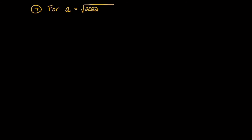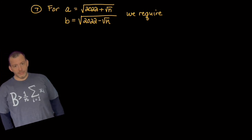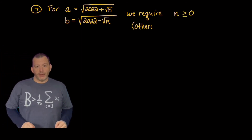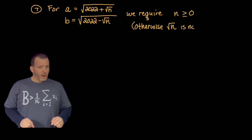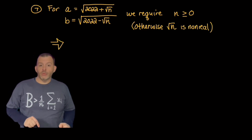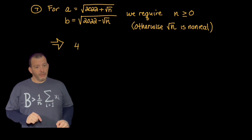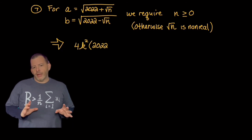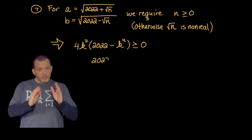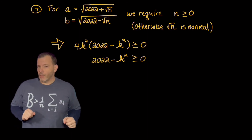Recall what a and b are: a is the square root of (2022 + √n) and b is the square root of (2022 − √n). We can now put bounds on n. First, we require that n ≥ 0, otherwise the square root of n will be unreal. We can then apply the expression for n and set it greater than or equal to zero to put some boundaries on k².